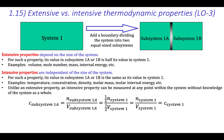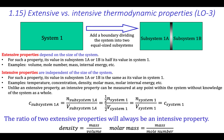In general, the ratio of any two extensive properties will be an intensive property. Additional common examples of this include density, which is equal to mass divided by volume, and molar mass, which is equal to mass divided by mole number.